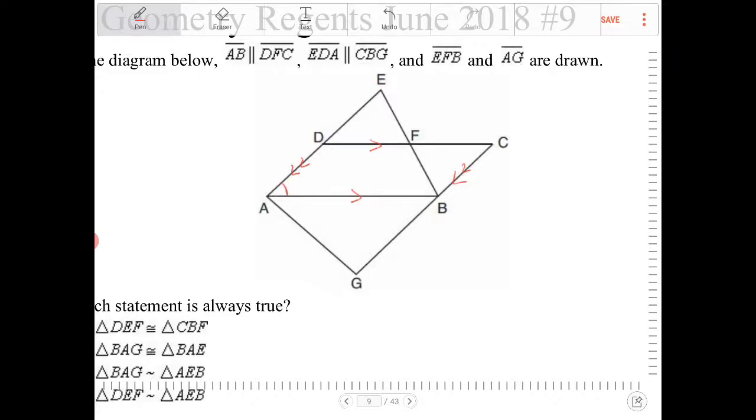This angle over here is going to be congruent to this angle because in a parallelogram, opposite angles are congruent. So if those angles deserve one tick mark, then angle C and angle ABG also deserve one tick mark.